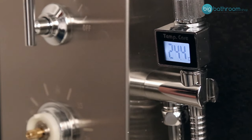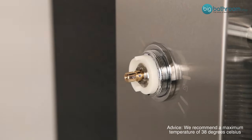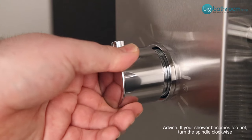Allow the temperature to regulate, and if the shower is still too cold, proceed with another turn of the spindle one quarter of a turn anti-clockwise until you reach your desired maximum temperature.